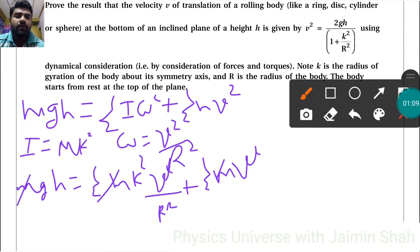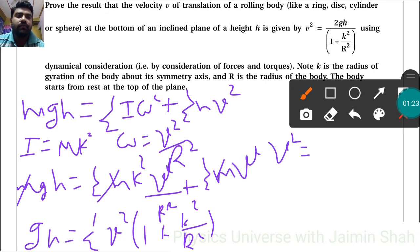Now, gh = ½v²(1 + k²/r²). Making v² the subject, we get v² = 2gh/(1 + k²/r²).